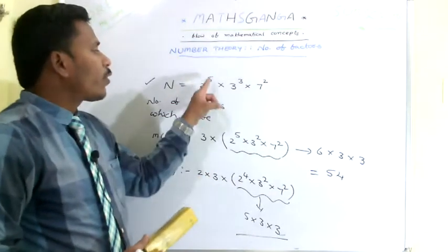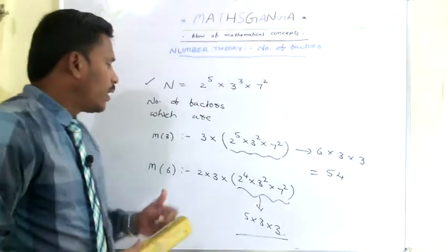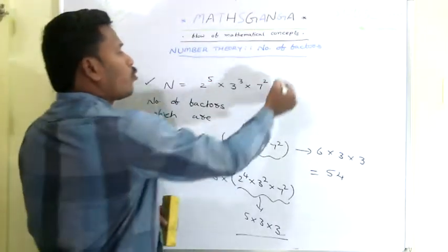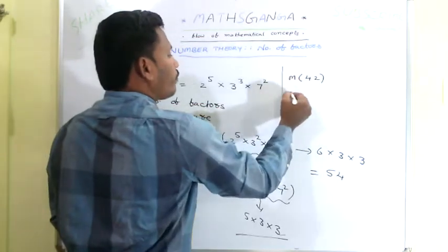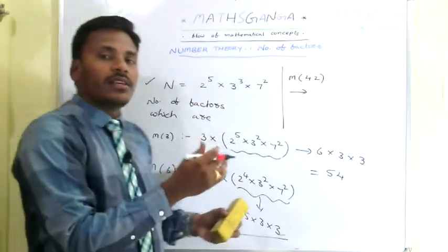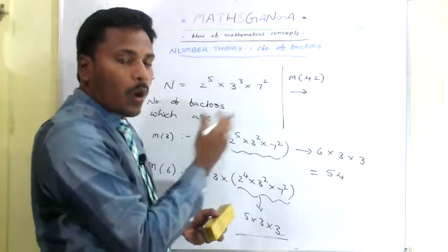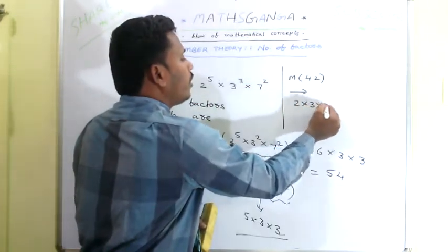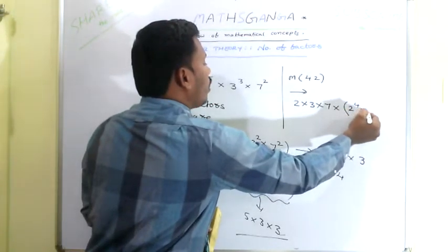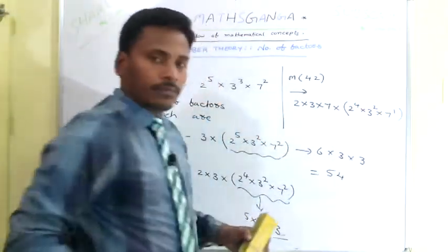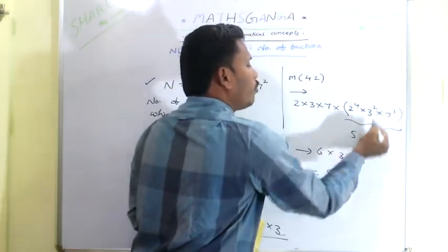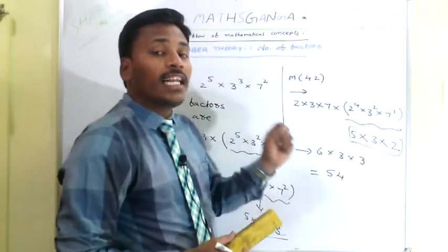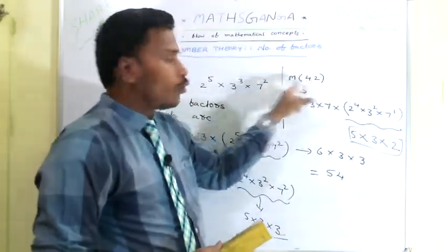The direct rule is the powers of the primes plus 1. If the special condition is multiples of 42 — since 42 = 2 × 3 × 7 — you just separate one 2, one 3, and one 7 from the prime factorization. The remaining number is 2^4 × 3^2 × 7^1. The number of factors is (4+1)(2+1)(1+1) = 5 × 3 × 2 = 30. So there are totally 30 factors which are multiples of 42 for the given number.